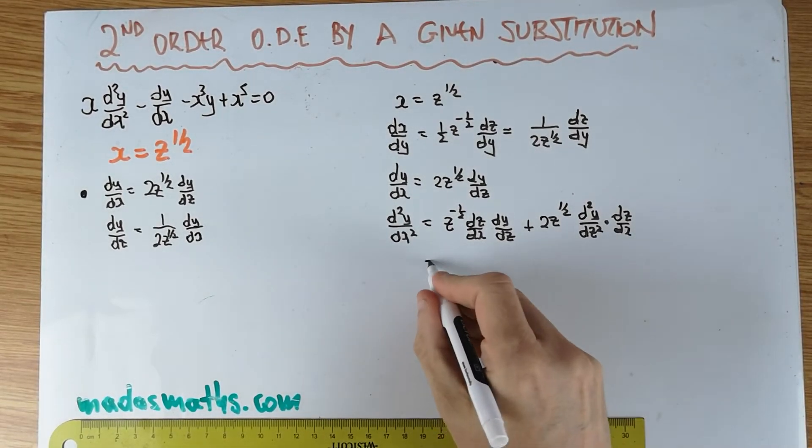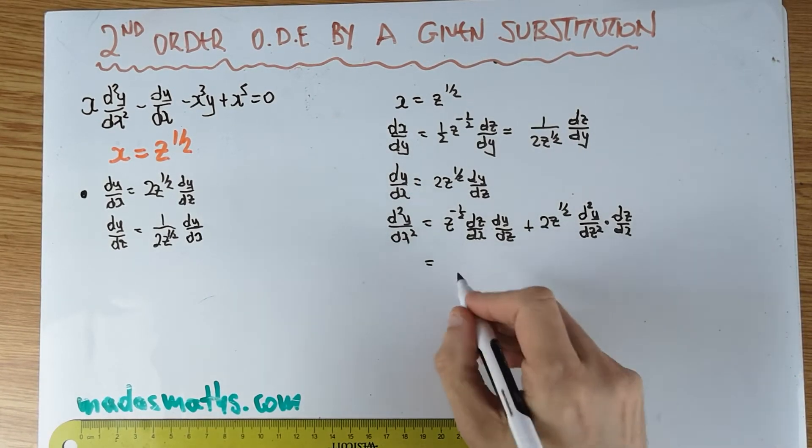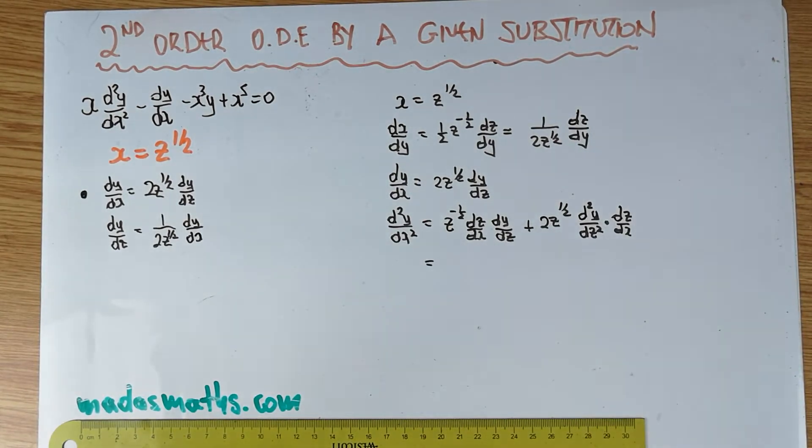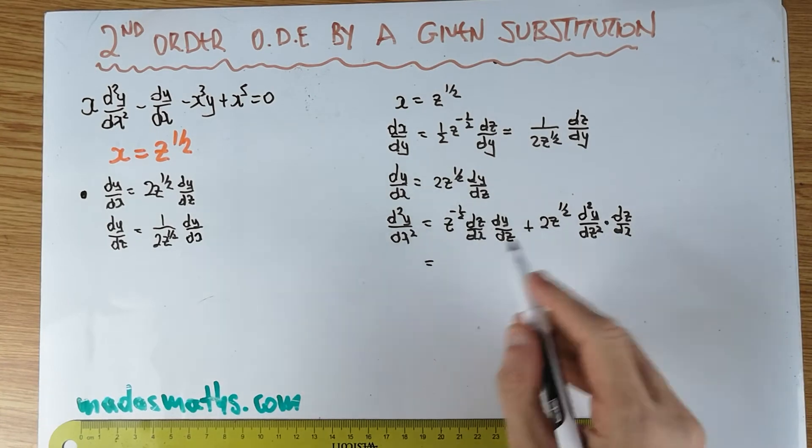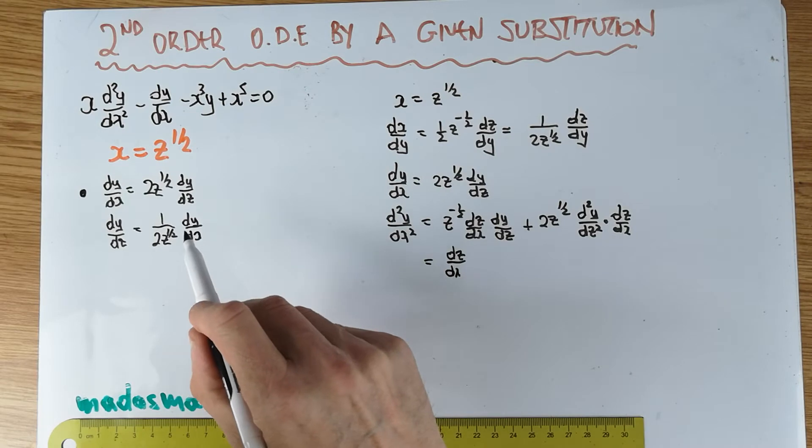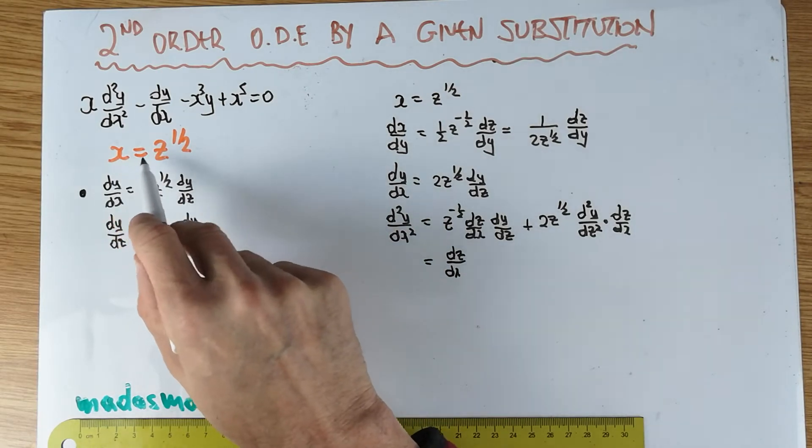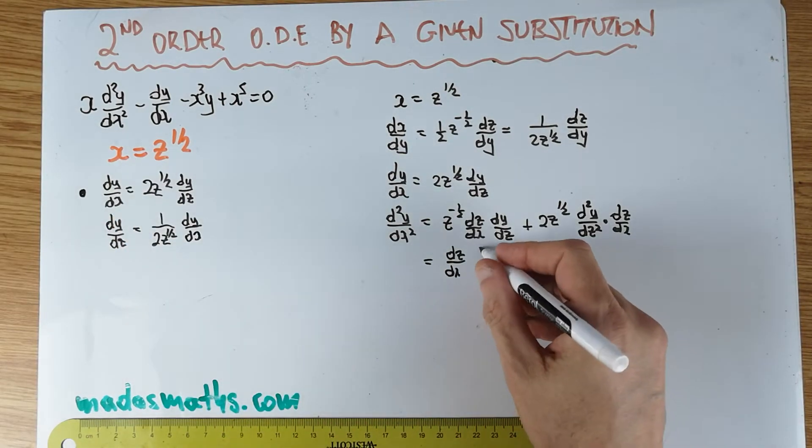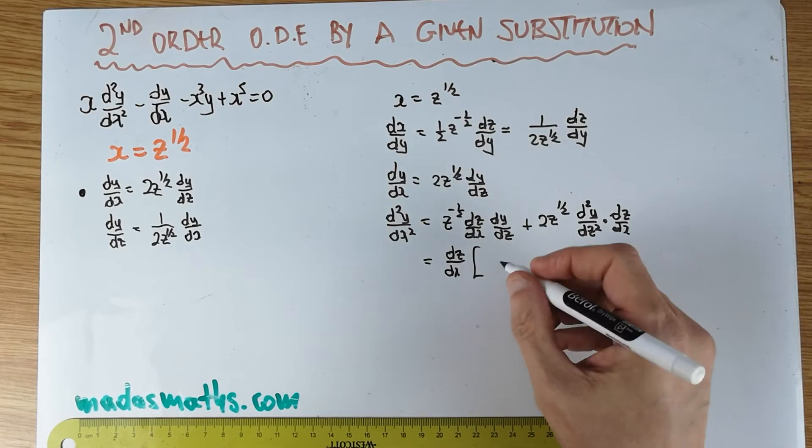So what can we do in there? First of all, I'm tempted to factorize the dz by dx, which I actually see in there. Do I have an expression for the dz by dx? No, I have. That is not difficult to get from there. So that has been factorized out.